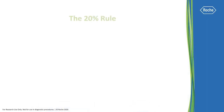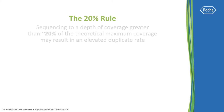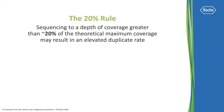So what is the 20% rule? It estimates the amount of sequencing depth you can expect with a low duplicate rate. As you meet and exceed the 20% theoretical maximum coverage based on your genome equivalents, your duplicate rate will likely increase.